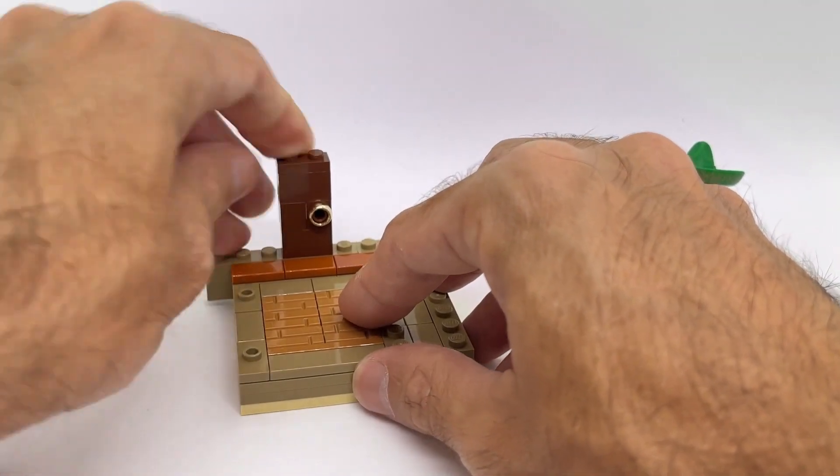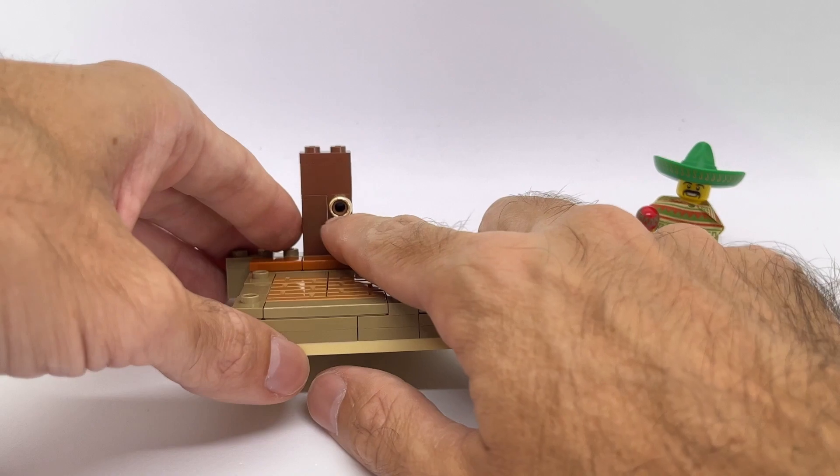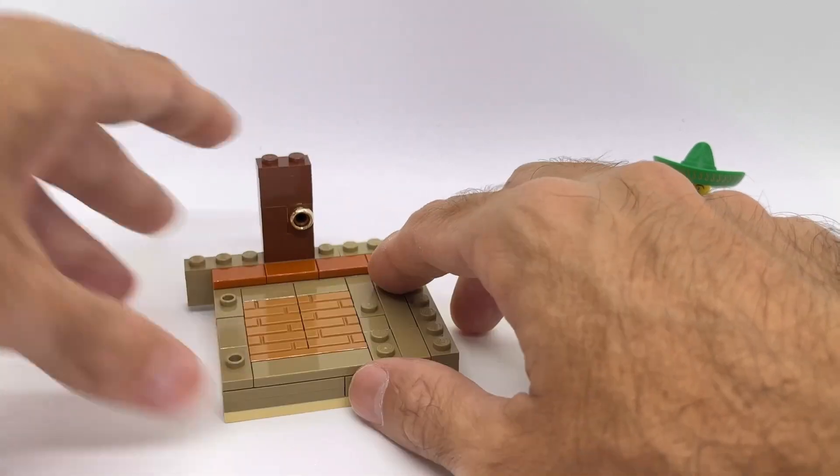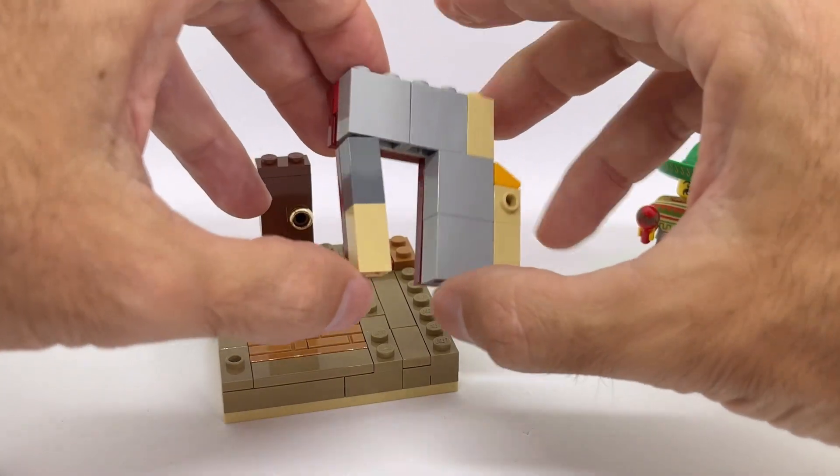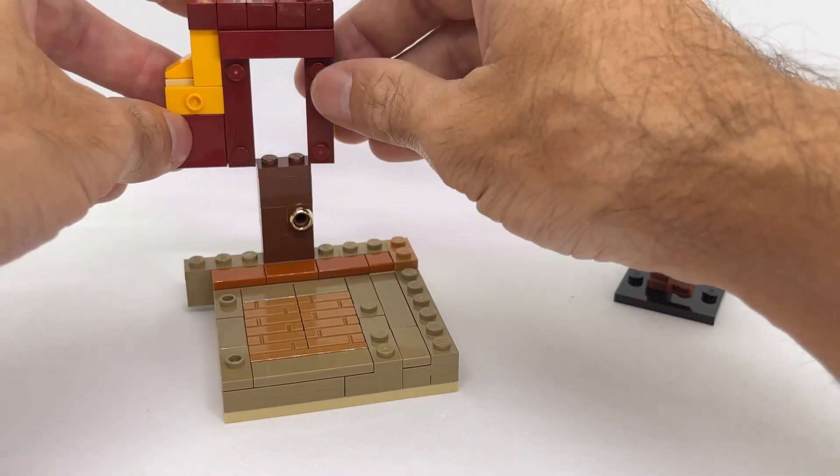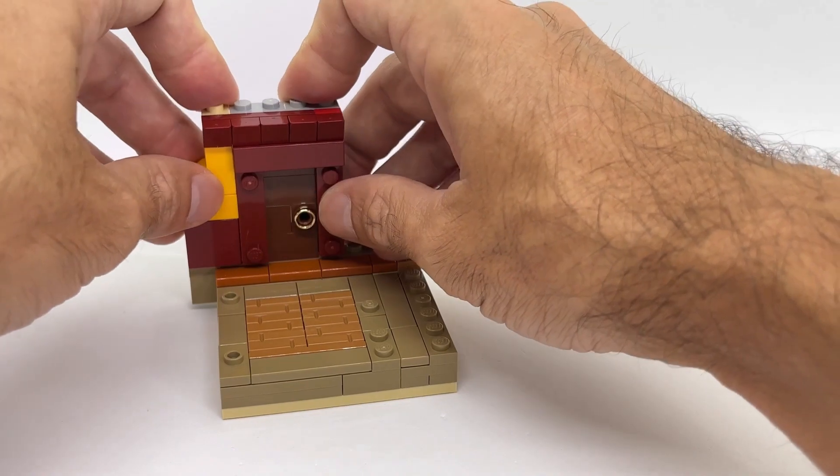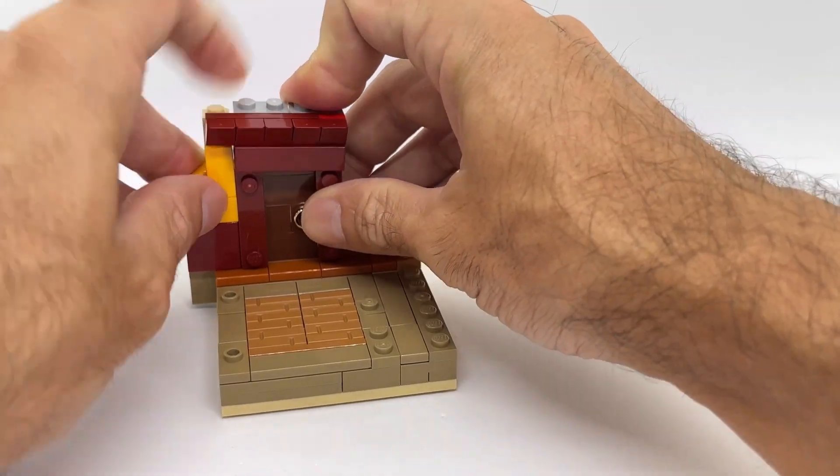So this is gonna be the door. Very simple and straightforward. I added a ring there with a modified brick so we have a handle. And then I have a selection of modified bricks to which all around I'm using the dark red and light bright orange color scheme.